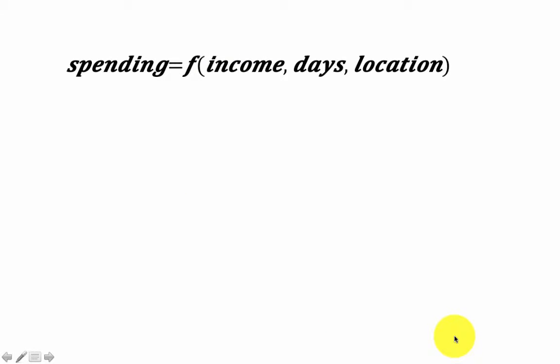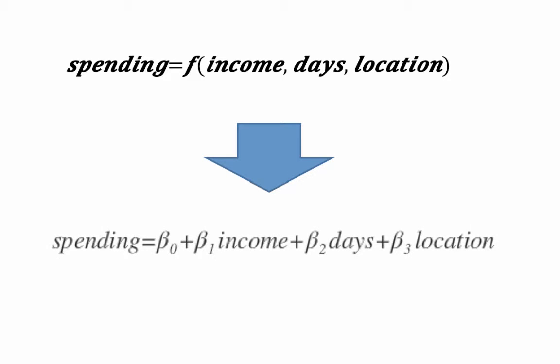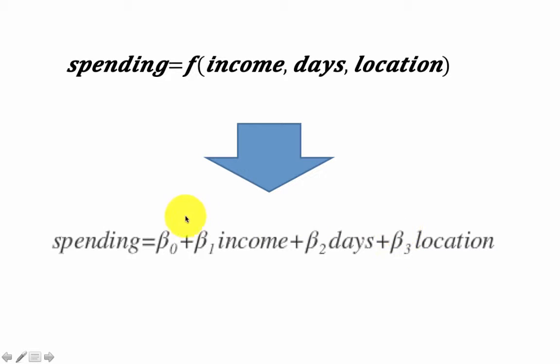Predictive analytics is all about exploiting relationships between attributes to arrive at our prediction. So we are trying to say that spending is a function of certain attributes like income, number of days, location, etc. In simple linear regression, we are trying to find an equation of this form — specifically we are trying to find the values for beta 0, beta 1, beta 2, beta 3 such that this expression is a good predictor of spending.